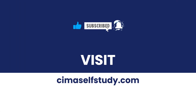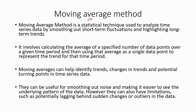In this video, I am going to discuss about the Moving Average Method. Moving Average Method is a statistical technique used to analyze time series data by smoothing out short-term fluctuations and highlighting long-term trends. It involves calculating the average of a specified number of data points over a given time period, then using that average as a single data point to represent the trend for that time period.